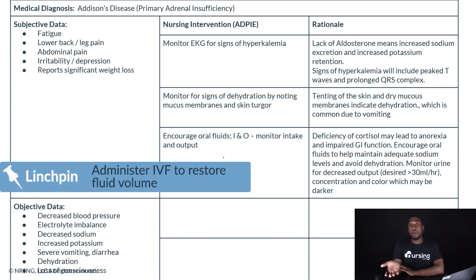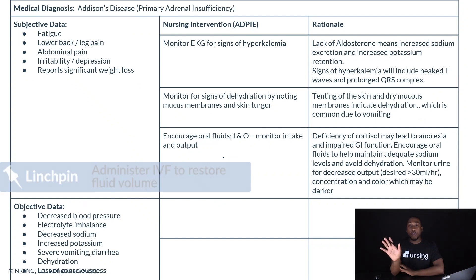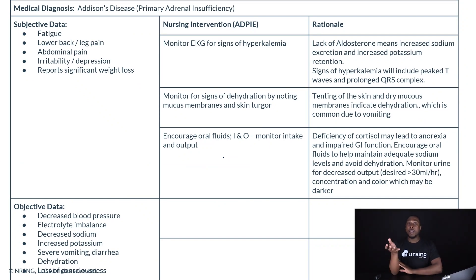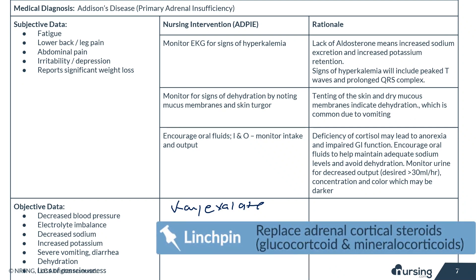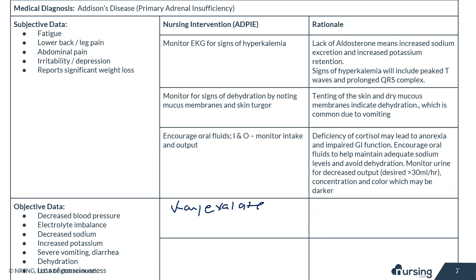We want to make sure we administer appropriate medications. There are three key medications to think of: K-exalate — think 'K-exit,' the K is going out — which is given to reduce potassium levels. Cortef, or any steroid such as prednisone, is going to increase cortisol levels. And Florinef is going to promote replacement and retention of sodium, so we keep that sodium in.